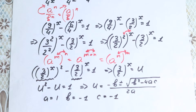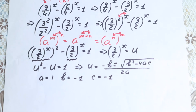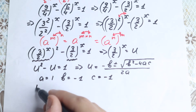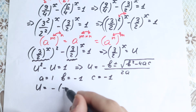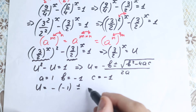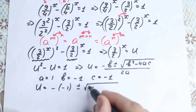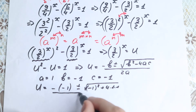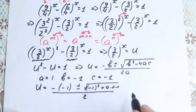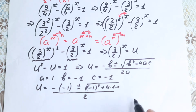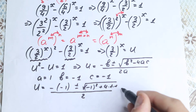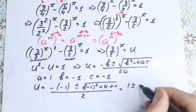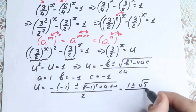Let's plug in all of these values. We have u equal to negative b, which is negative negative 1, plus or minus the square root of negative 1 squared plus 4 times 1 times 1, all over 2. So our u will be equal to 1 plus or minus the square root of 5, all over 2.